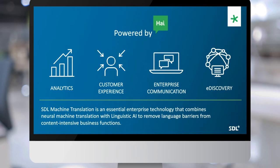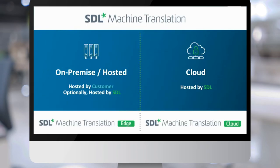Those business functions include analytics, customer experience, enterprise communication, and e-discovery. SDL Machine Translation has two distinct but complementary deployment options: SDL Machine Translation Edge — the on-premise or privately hosted deployment option — and SDL Machine Translation Cloud, which is hosted by SDL.